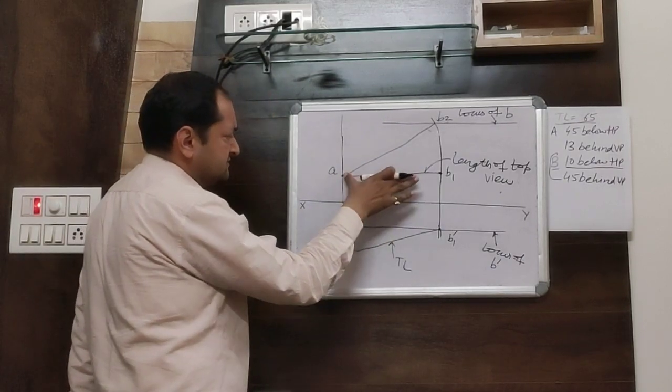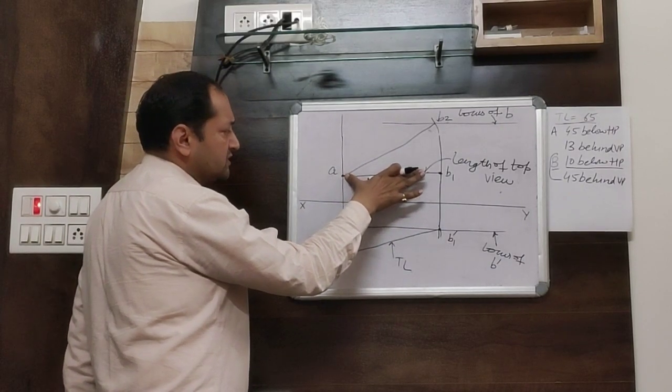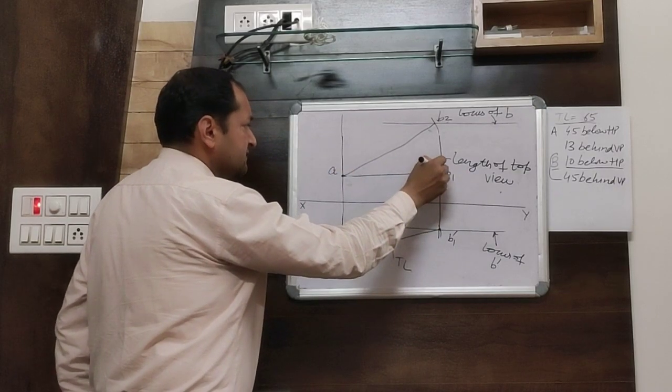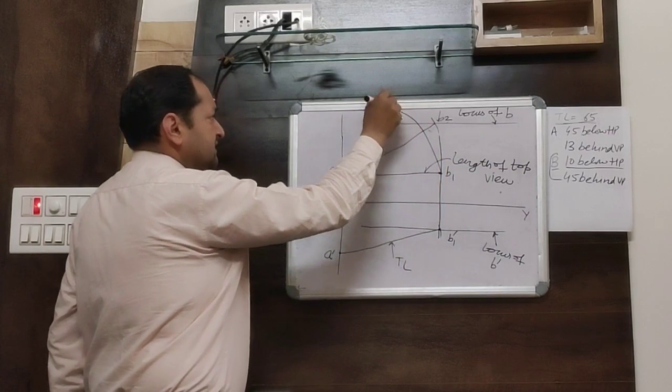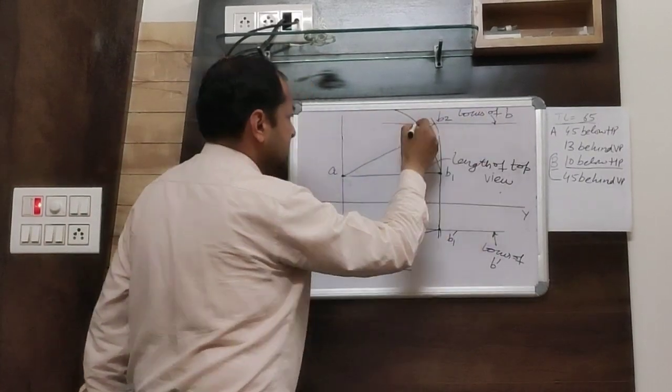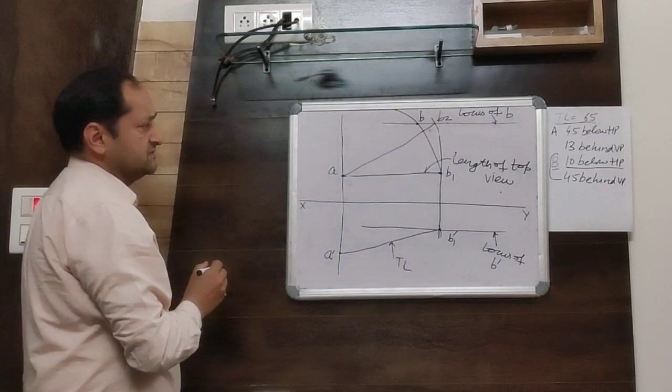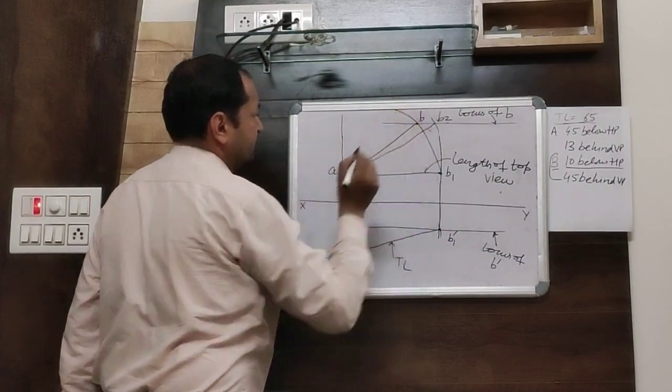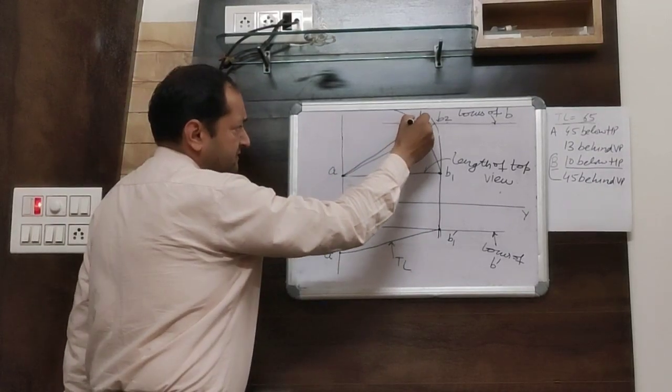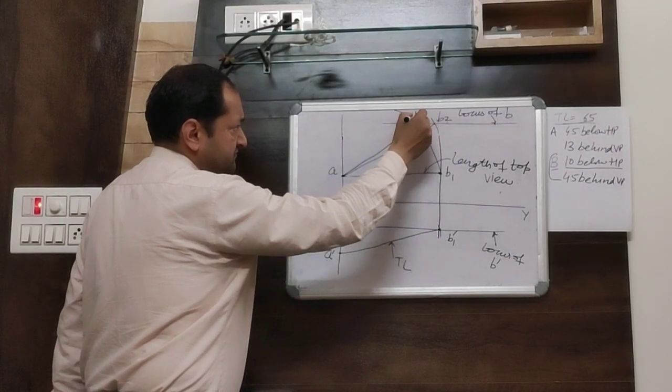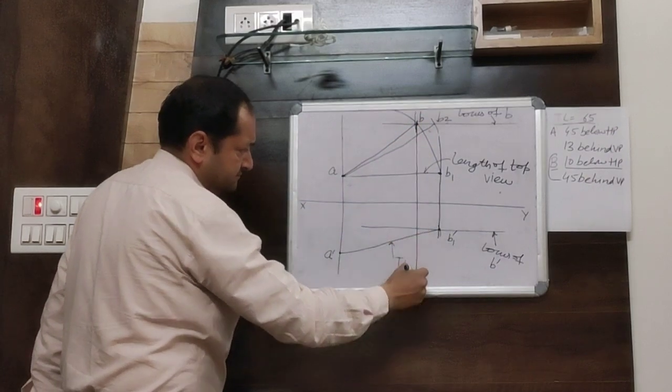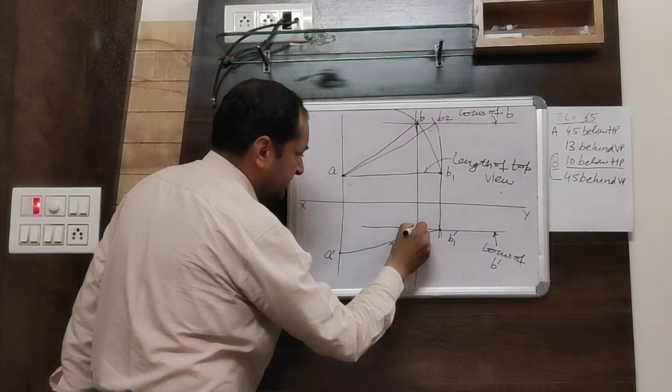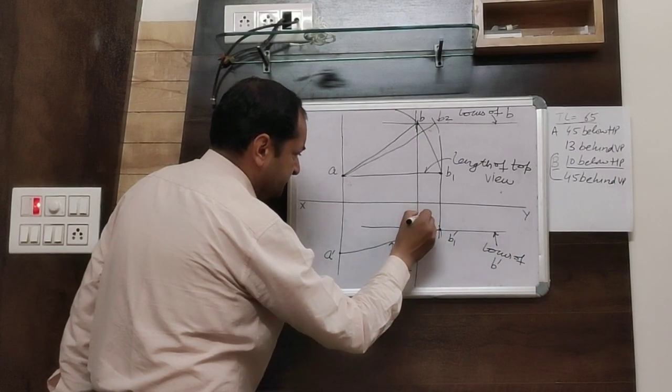Then, open your compass equal to AB1 and taking A as center, mark an arc intersecting the locus of B at B. Draw a projector line passing from B, intersecting the locus of B dash at B dash.